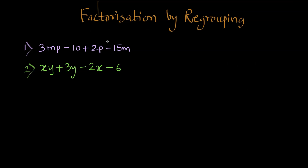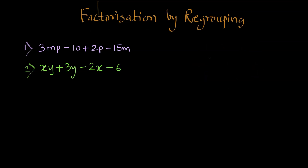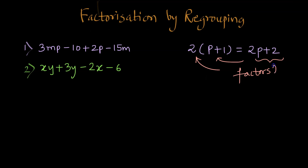We have two problems here and we need to factorize them by regrouping. When you have something like 4B, 4 and B are the factors of 4B. Similarly, if you have XY, X and Y are the factors of XY. Similarly, when you see something like 2 times (P plus 1), this expression would be 2P plus 2. Then you can say that 2 and (P plus 1) are the factors of 2P plus 2.